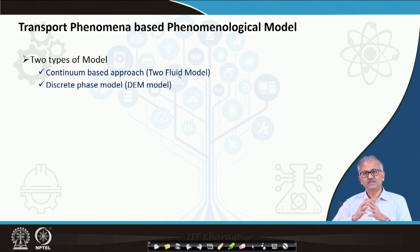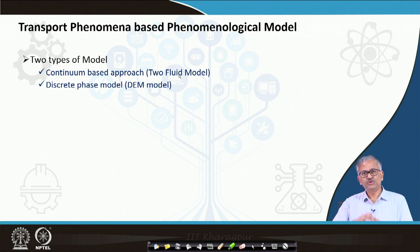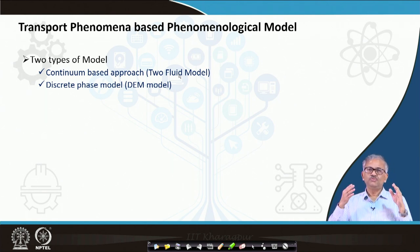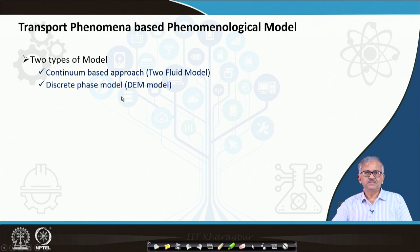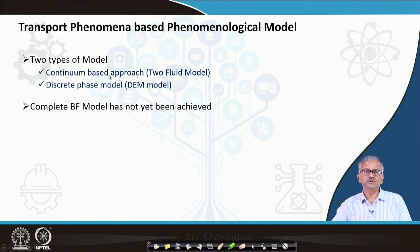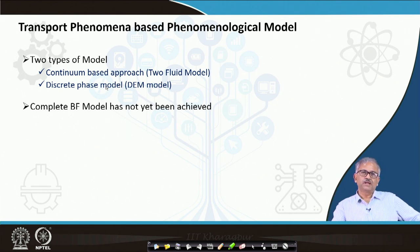Another is the discrete phase model, based on the Discrete Element Method (DEM) available in commercial software. In the discrete phase model, you make a force balance on each particle — basically you track each and every particle separately. You know its position as a function of time in the reactor. This gives a more realistic picture, and it can also be transient with time. The continuum-based model is mostly a steady-state problem, while the discrete phase model for the blast furnace is transient. A complete blast furnace model has not yet been achieved.